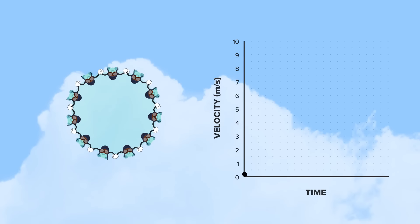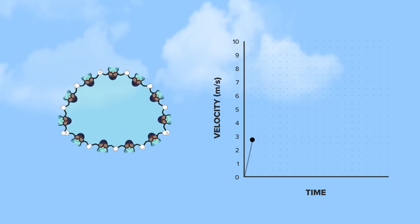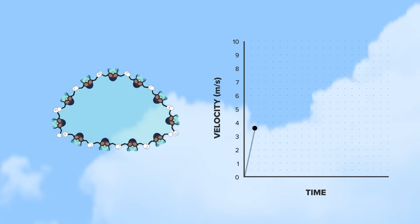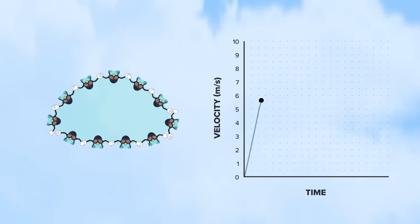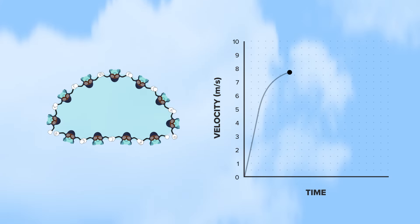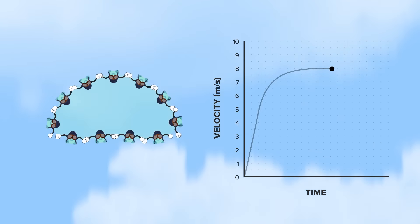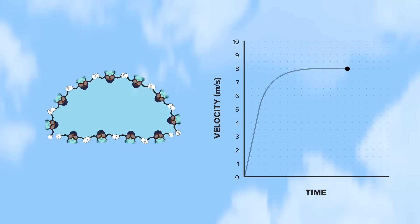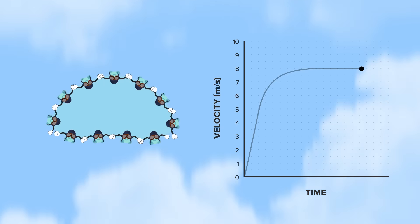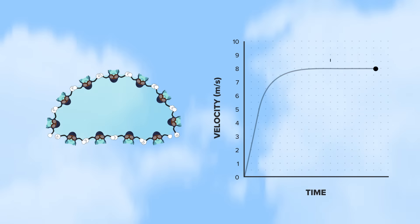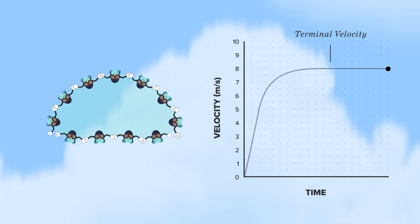As an object begins to fall due to gravity, it accelerates. Its velocity increases until the force of collisions with air molecules equals the force of gravity pulling it down. At this point, it stops accelerating and the velocity levels off. This is terminal velocity.